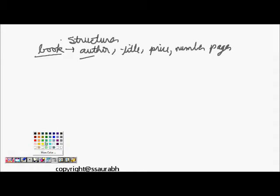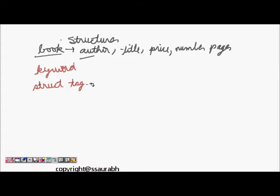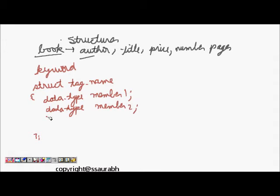So the main thing to remember in structure is that the keyword is struct. We write struct, then the name of the structure, let's say tag name. Then we have parenthesis and write data type of the first element, member 1, data type of second element, member 2, and keep on going till the end. Data type member 3.